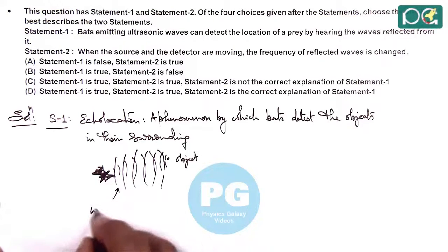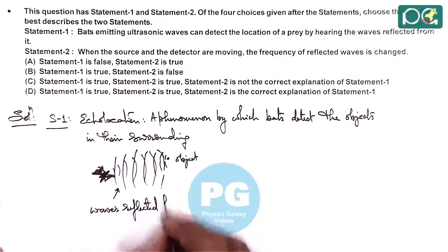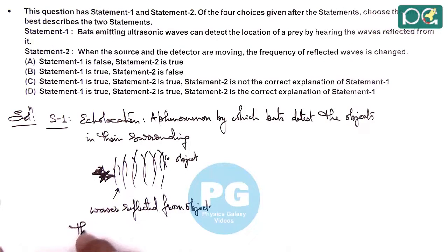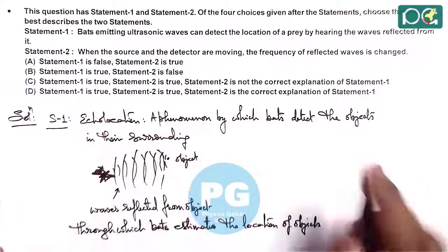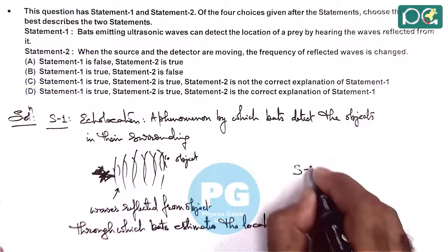So these are the waves reflected from the object, through which the bat estimates the location of the object. In this situation, what is given in statement one is true.